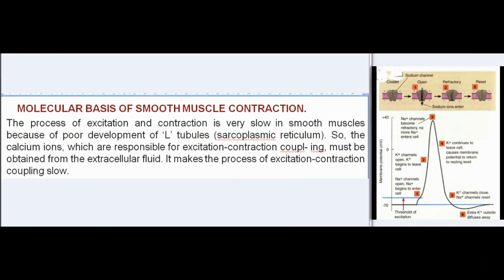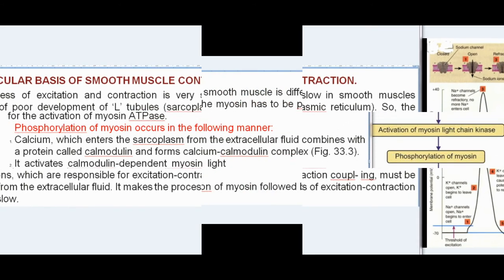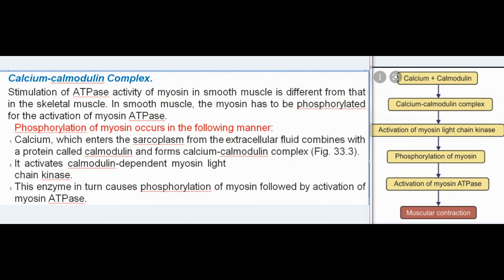Molecular basis of smooth muscle contraction: the process of excitation and contraction is very slow in smooth muscles because of poor development of L-tubules and sarcoplasmic reticulum. So the calcium ions, which are responsible for excitation-contraction coupling, must be obtained from the extracellular fluid. This makes the process of excitation-contraction coupling slow. Calcium-calmodulin complex: